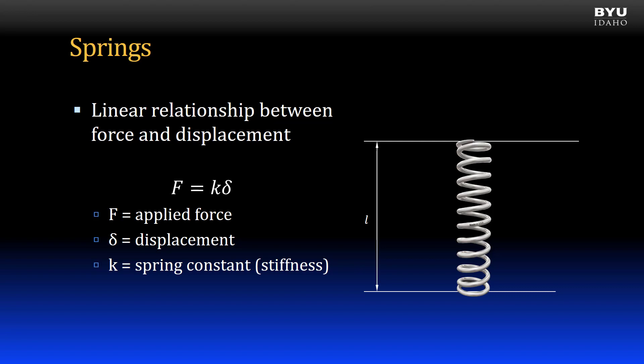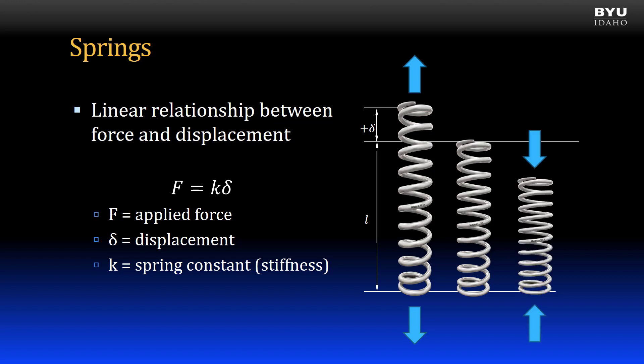If K is big, the spring displaces only a little under a unit load. If K is small, the spring displaces a lot under a unit load. The applied load on a spring can be a tension load or pull. In this case, the displacement of the spring is an elongation and the final length will be the original length L plus delta. The applied load can also be a compression load or push. In this case, the displacement is a compression and the final length will be the original length L minus delta.